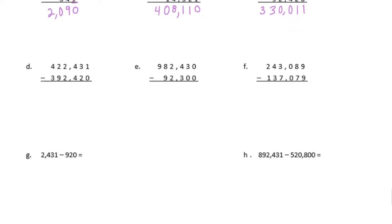D: 1 minus 0 is 1, 3 minus 2 is 1, 4 minus 4 is 0, 2 minus 2 is 0. 2 minus 9 we can't do, so I'm going to borrow from the 4 and make it a 3 — that becomes 12. 12 minus 9 is 3, and 3 minus 3 is nothing, so I'm not even going to put the 0 down. We have 30,011.